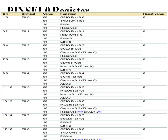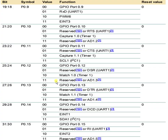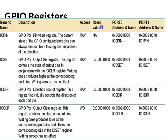The next register is the Direction Register (IODIR). This is used for setting the direction of a single pin or multiple pins — whether we want to make them input or output, we use the IODIR register.